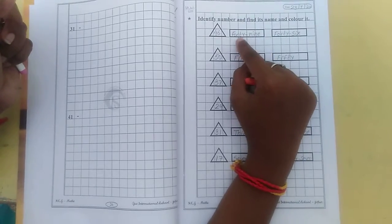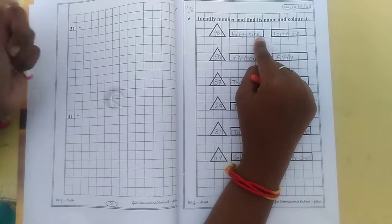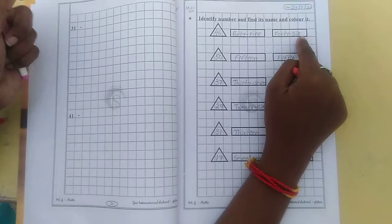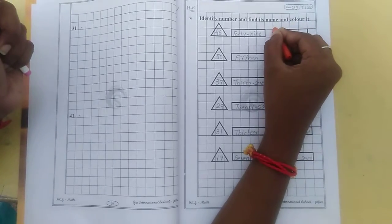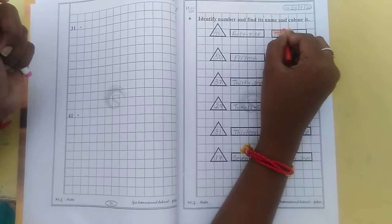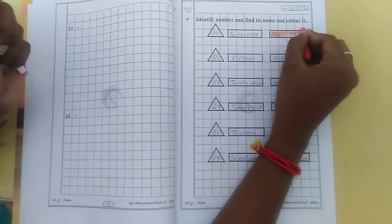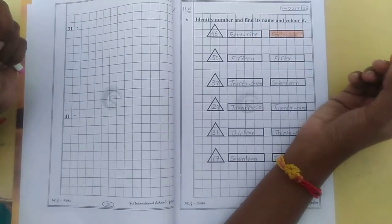So here F-O-R-T-Y 40, N-I-N-E 9. Is it? No. Next is F-O-R-T-Y 40, S-I-X 6. So this is the number name, correct? Okay. So here I am going to fill orange color. Make sure no need to take it out of this box.